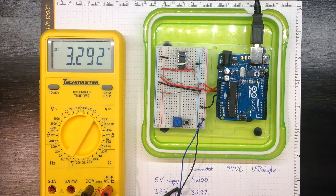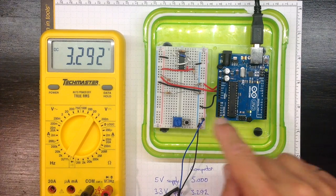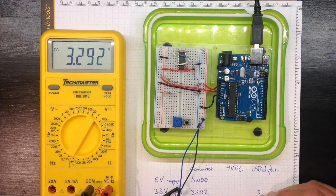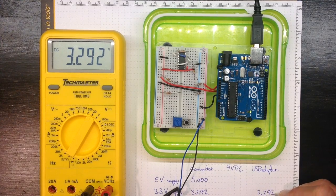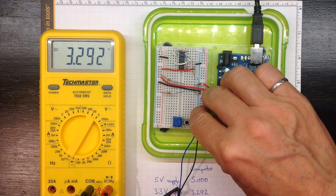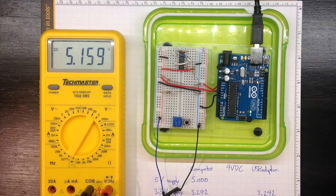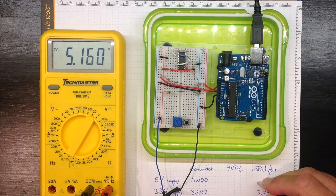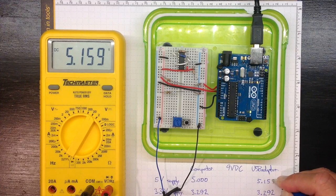When I plug that in, I'm still getting 3.292 volts on the 3 volt side. So 3.292. And on the 5 volt side, 5.159.